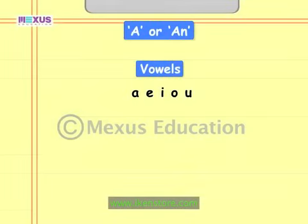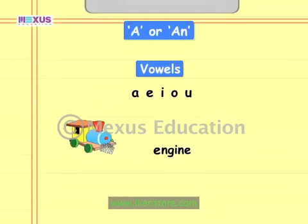When a word starts with a vowel — or more specifically, with a vowel sound — we use 'an' before such words. For example, the word 'engine' starts with the vowel E, having a vowel sound 'eh'. So we use 'an' before this word and say 'an engine'.